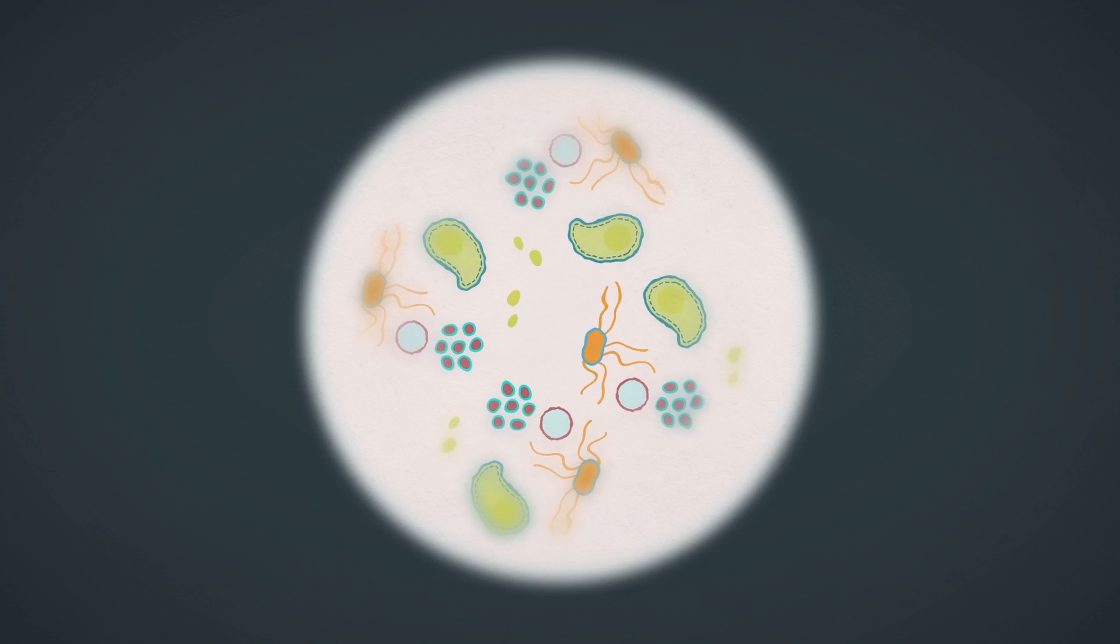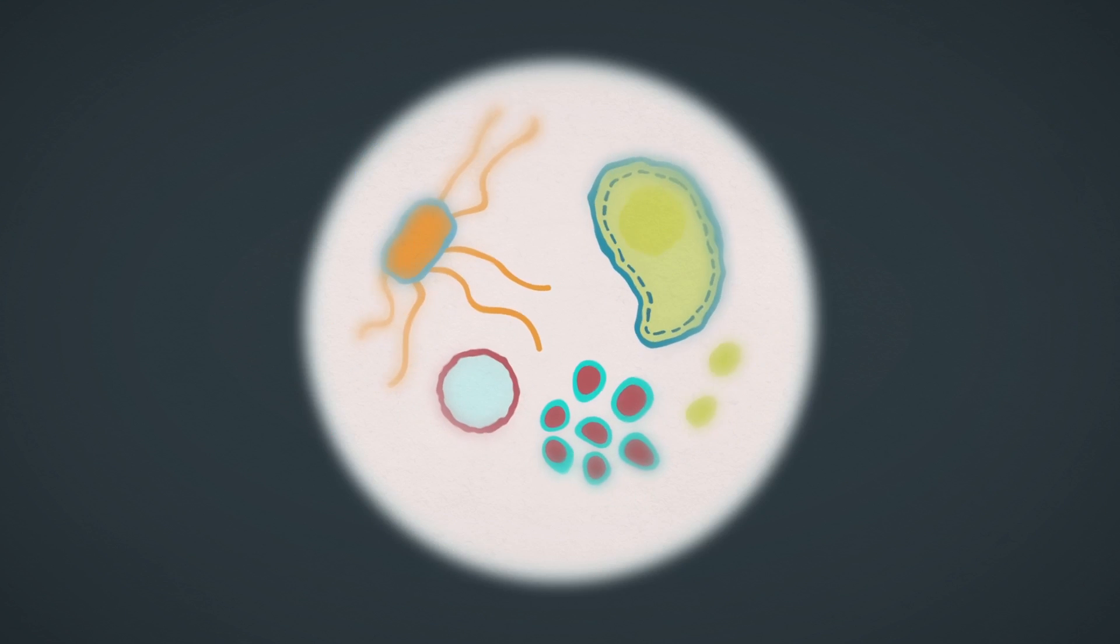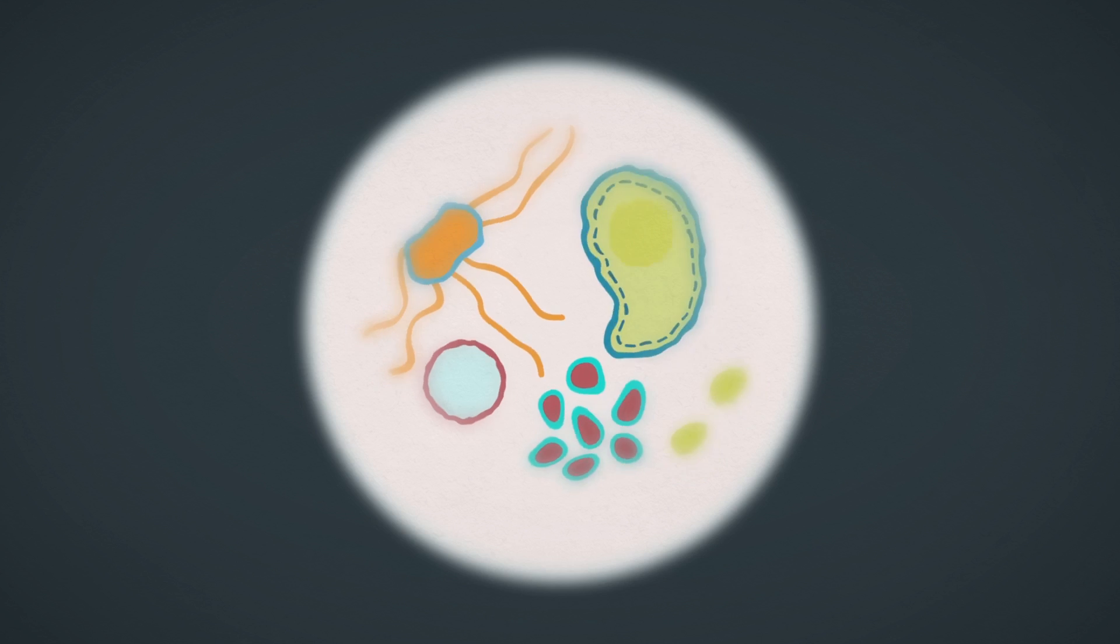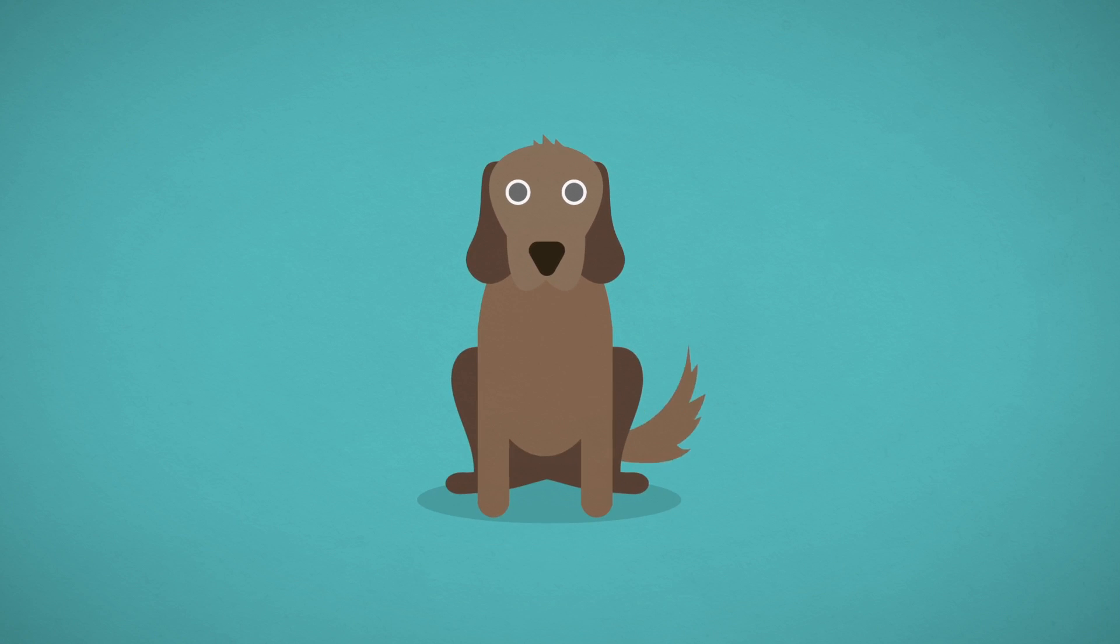One Health is also helping researchers find a better way to treat and prevent certain forms of cancer in both animals and people. Using advanced techniques, a type of vaccine has been developed to help treat dogs that have a type of cancer called melanoma.